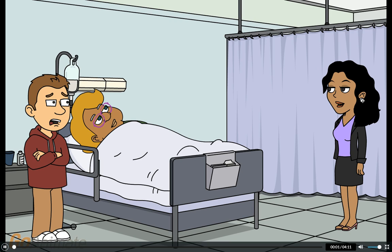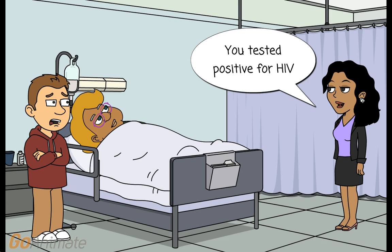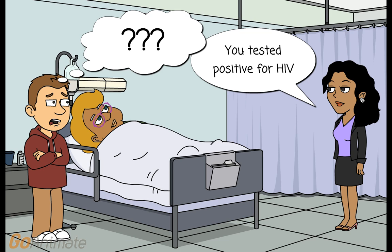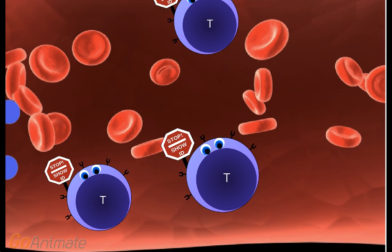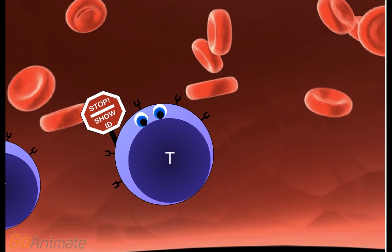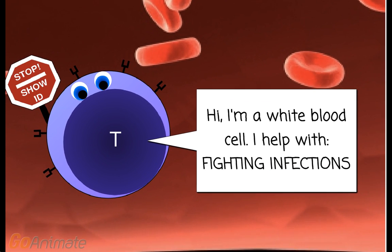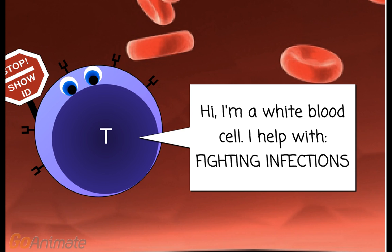You've probably heard of HIV before, but do you know how it affects humans and the body? HIV, or human immunodeficiency virus, is a virus that primarily infects cells called CD4 T cells, which are a type of white blood cell that play a major role in immunity, or the body's ability to fight off infection.